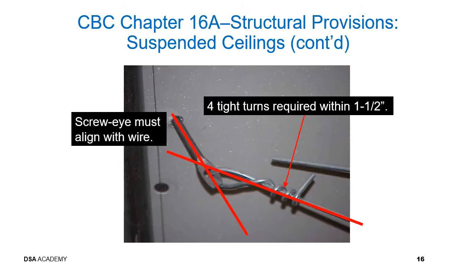This photo shows two issues. First, the screw eye is not aligned with the bracing wire direction. Second, there are only three tight turns when four tight turns are required within 1.5 inches at the end.